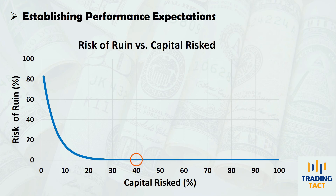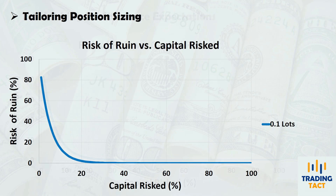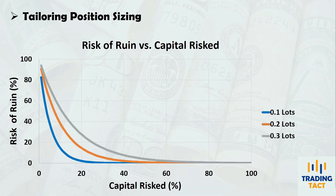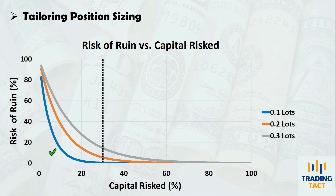Establishing your performance expectations beforehand will save you a lot of anxiety and indecision in real time. You can also use your risk of ruin to tailor your position sizing. The previous chart assumes a fixed 0.1 lots per trade. If you decide to increase your position sizing, both your average winner and average loser will increase. Here's how the chart changes for 0.2 and 0.3 lots — there's a significant increase in risk of ruin as your position sizing becomes more aggressive. If you're only willing to risk 30% of your initial capital and want a risk of ruin below 1%, you should be trading about 0.1 lots.